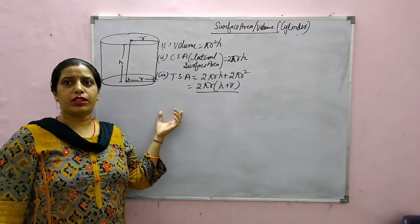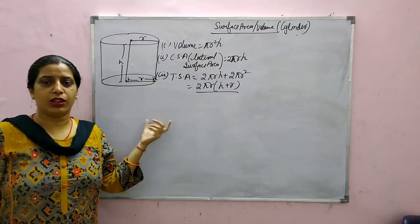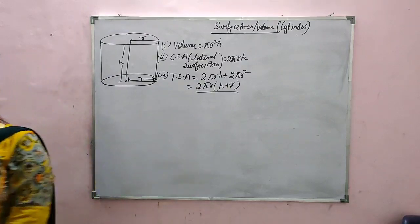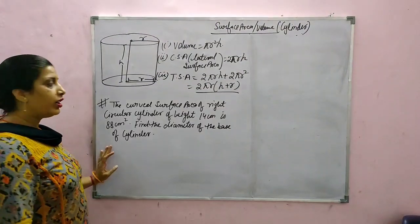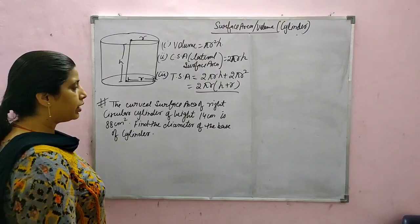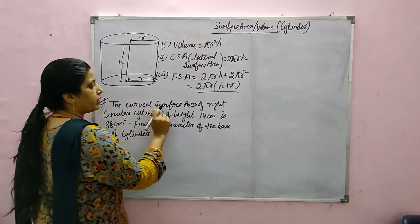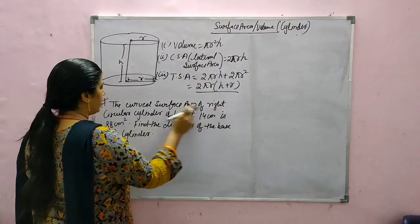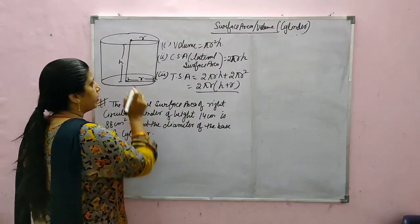Now we will do different questions based on surface area and volume of cylinder. Our first question is based on curved surface area: the curved surface area of a right circular cylinder.